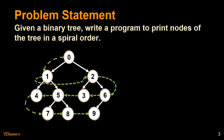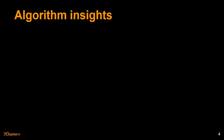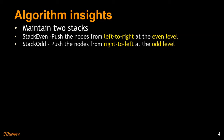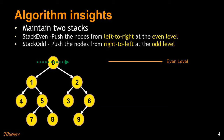Let's see how we solve this and look at some insights into the algorithm we are going to use. We are going to maintain two stacks and fill them at two different levels — odd level and even level. If we are at the even level, we are going to traverse from left to right and push nodes into the even stack, and when we are at the odd level we go from right to left.